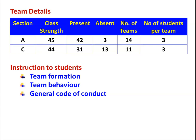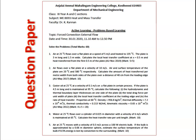Every team needs to submit only one answer. The student with the better handwriting can write all the answers in the answer paper provided. They have to submit the answer at the end of the two periods. The question paper had five questions, all from forced convection external flow heat transfer. The theory and use of the Heat and Mass Transfer data book and selection of equations were already discussed in the classroom, and now they solve problems based on that theoretical knowledge.